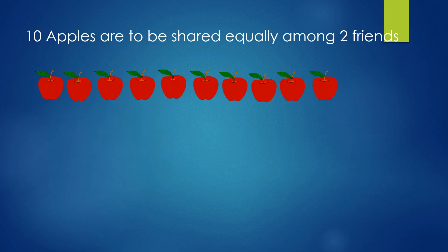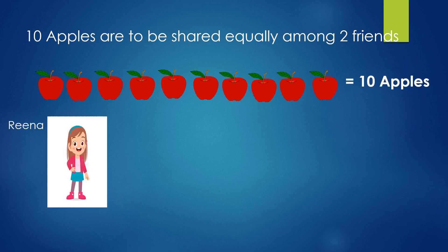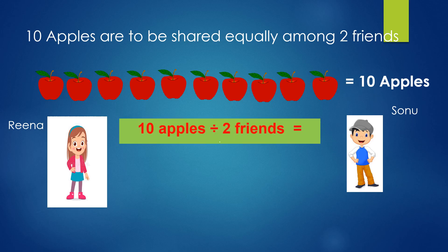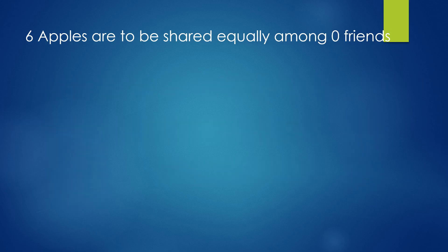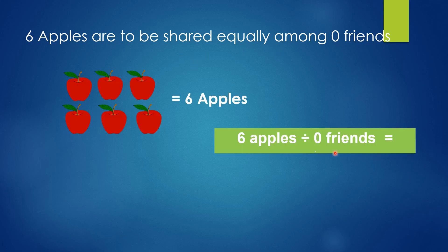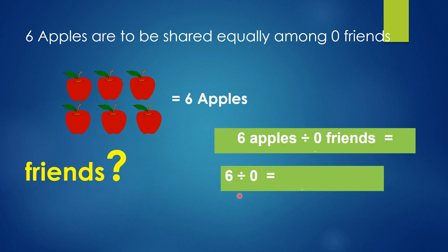Let's take an example: ten apples are to be shared equally among two friends, Rina and Sonu. When you divide ten apples among two friends, each person gets five apples — ten divided by two equals five. Now consider: six apples are to be shared equally among zero friends. Zero friends means the absence of the quantity called friends — there are no friends available. But we have to share six apples among them. Will it be possible when no friends are available? So when you are not in a position to divide among zero people, it is the absence of quantity — six divided by zero is undefined, which is not possible.